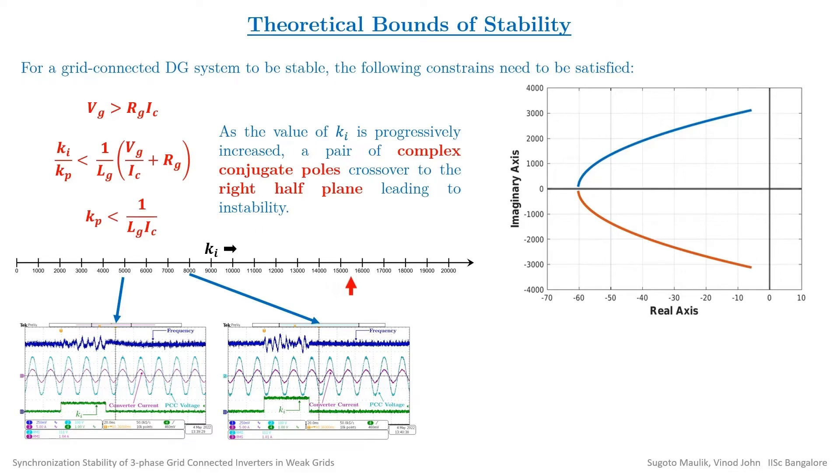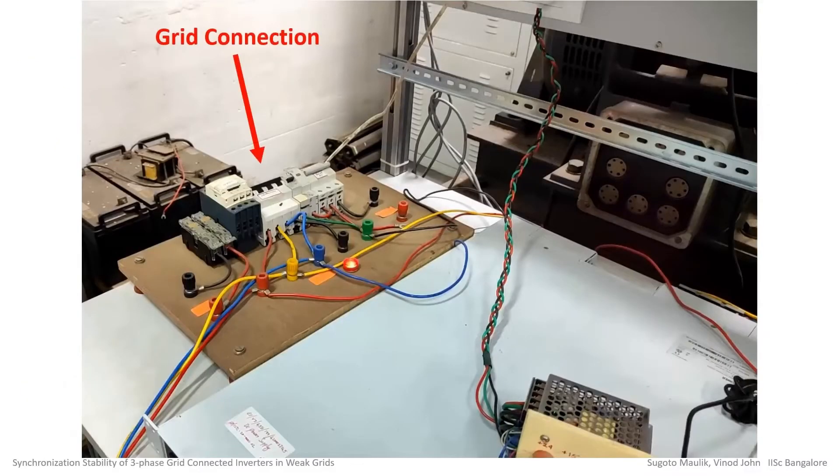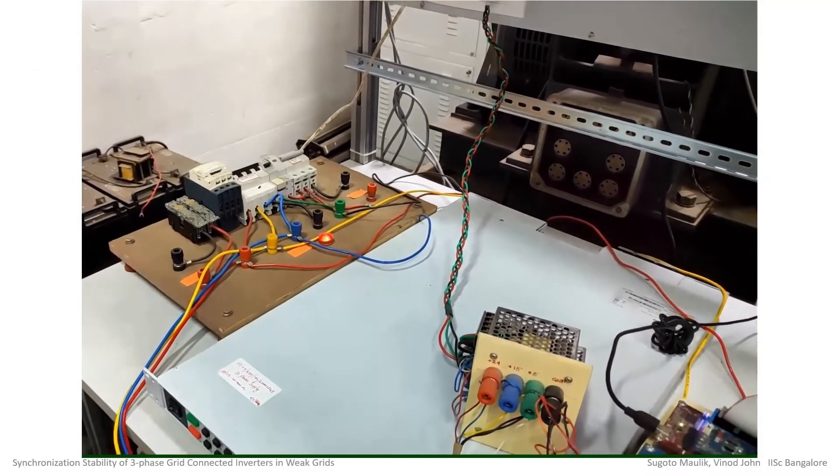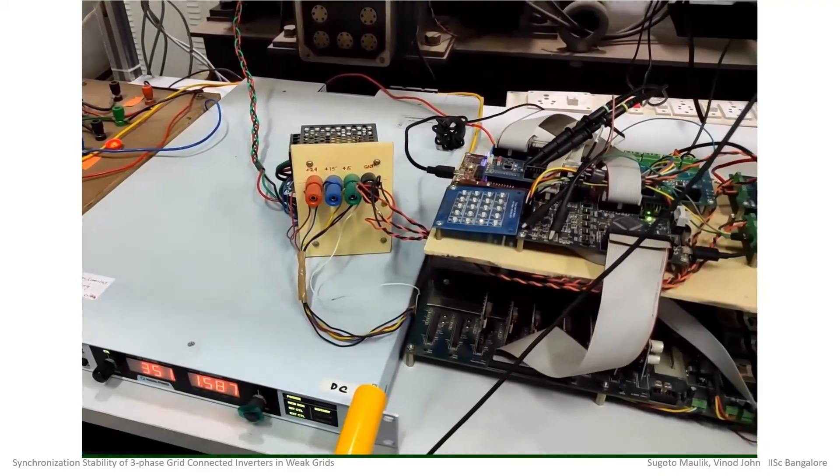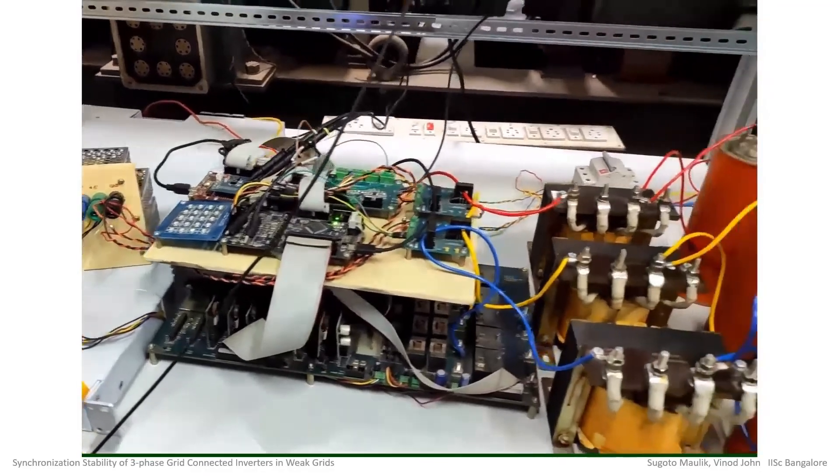Experiments are performed on a lab setup where a three-phase supply acts as the grid connection point. A DC source along with an inverter and its control are used to emulate the distributed resource.